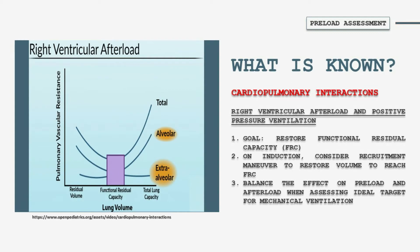As with preload, right ventricular afterload can also be adversely affected by positive pressure ventilation. Looking at this figure, what this essentially shows is that, overall, in the lung, if you are too atelectatic or too overdistended, you are likely to have elevated pulmonary vascular resistance. The goal of mechanical ventilation is to restore functional residual capacity. Both right ventricular preload and afterload may be adversely affected by mechanical ventilation, but if you titrate ventilation correctly, the right ventricular afterload may be mitigated to increase pulmonary blood flow and therefore left ventricular preload and, as a consequence, cardiac output.